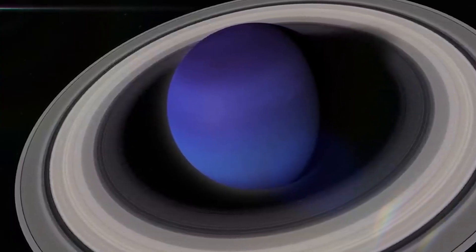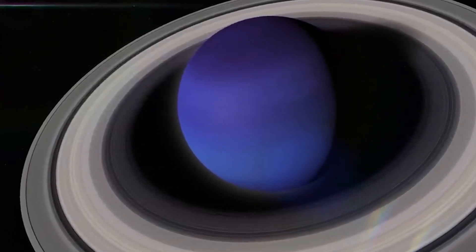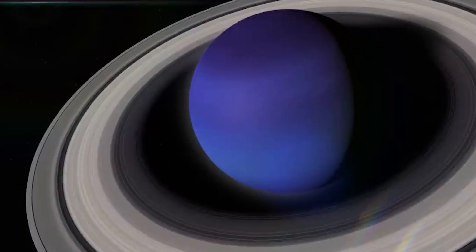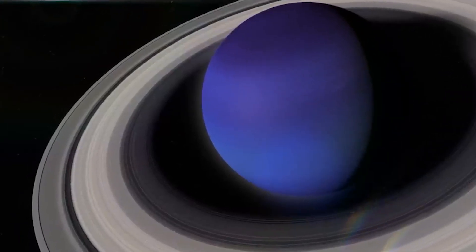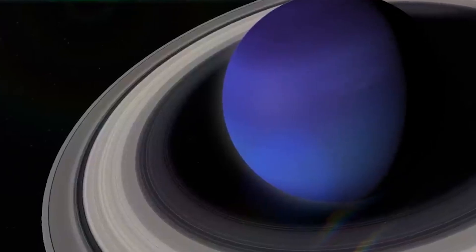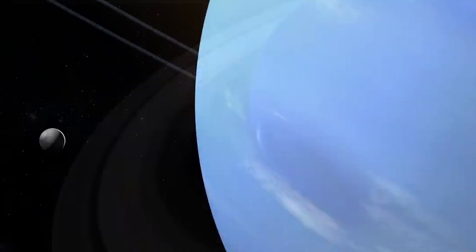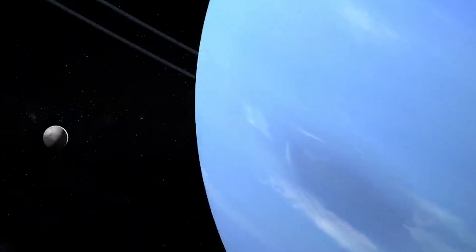Despite its vast distance from this belt, Neptune's gravitational pull influences the movements and orbits of many objects within it. This long-range gravitational interaction, known as resonance, helps explain why some Kuiper Belt objects, such as Pluto, follow very specific orbital patterns.